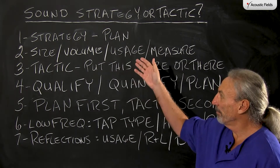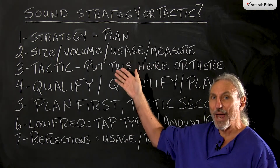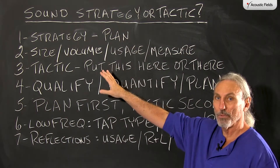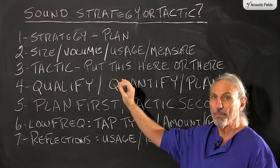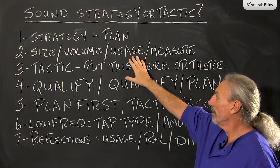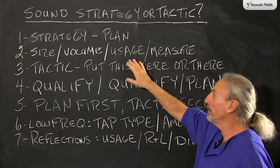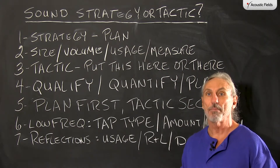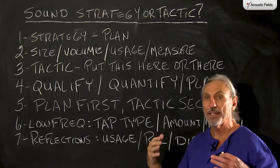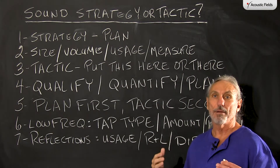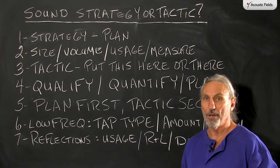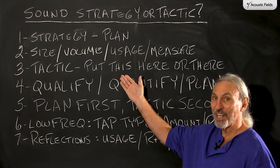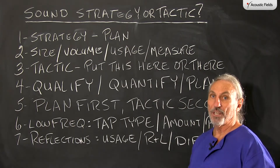So we're going to develop a strategy first. A strategy is a plan. We're going to look at the whole room — the size of the room, the volume of the room. We're going to decide what we're going to do in the room. We're going to measure or refer to existing measurements. We're going to get some kind of qualification of what we're doing. We're not just going to put this thing here or this thing there.